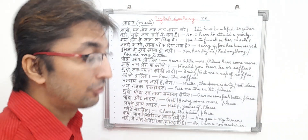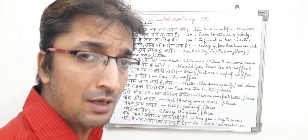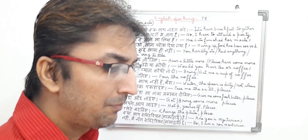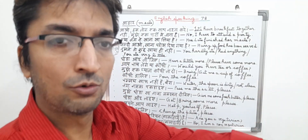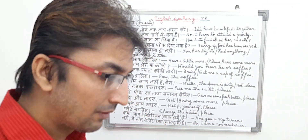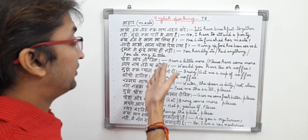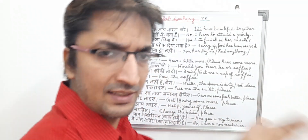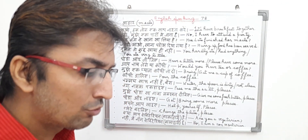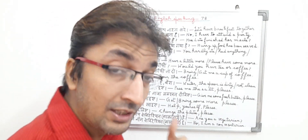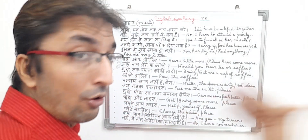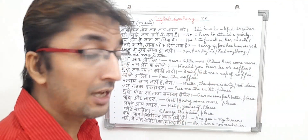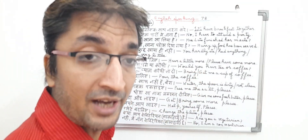Thoda aur lijiye. In English, it means 'Have a little more, please have some more.' The sentence basically means the person is offering another person more food. We can see in our daily life when someone comes to our home and is eating food with us — we normally say 'Thoda aur lijiye,' and offer them more. In English, it means 'Have a little more, please have some more.' It is a meal time sentence.